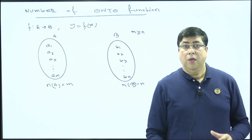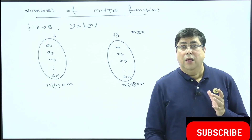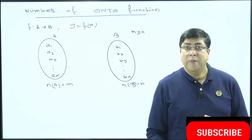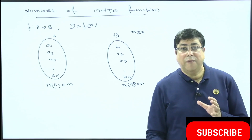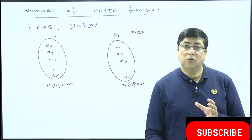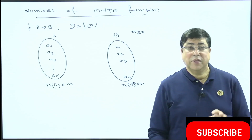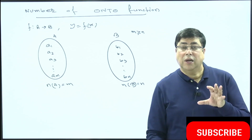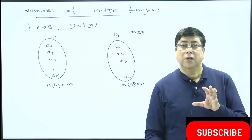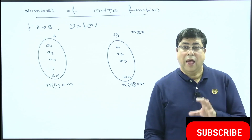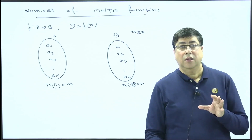What is onto mapping? Onto mapping means every element of the codomain has at least one pre-image in the domain set. It means every element of set B must be used by the elements of set A — every element of set B has at least one pre-image in set A.